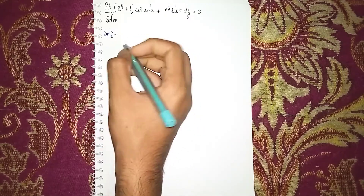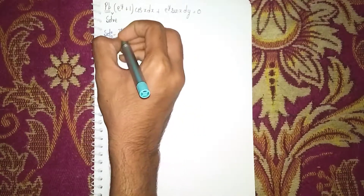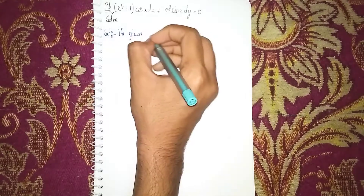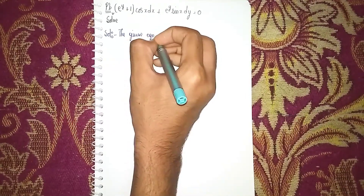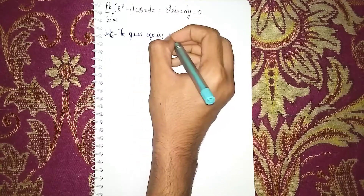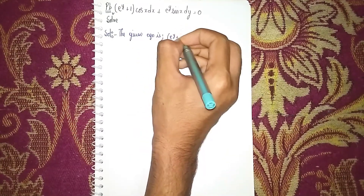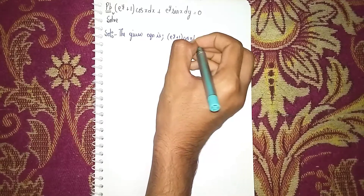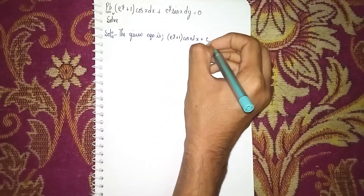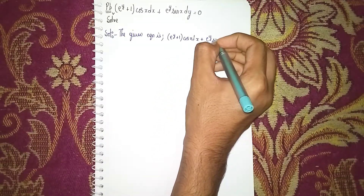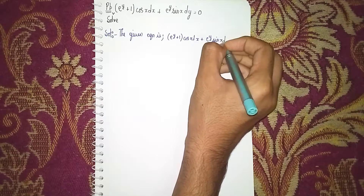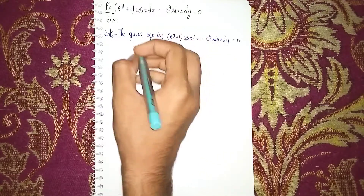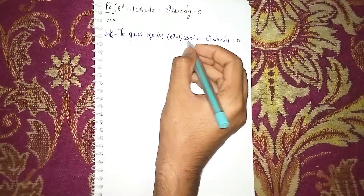The given equation is e^(y+1) · cos x · dx + e^y · sin x · dy = 0.